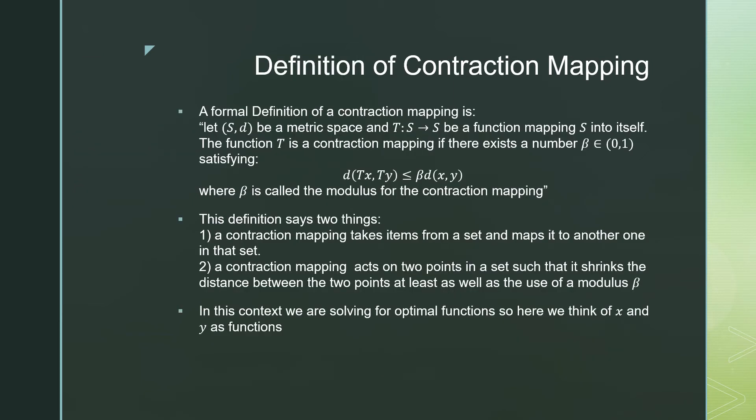So in terms of giving a formal definition of a contraction mapping, let S,D be a metric space, S being our set and D being our metric such that T maps S to S. It's a function of S onto itself. The function T is a contraction mapping if there exists a number beta, which lies on the interval of zero to one, satisfying the following.